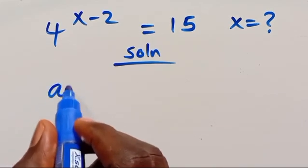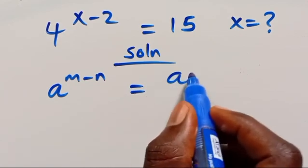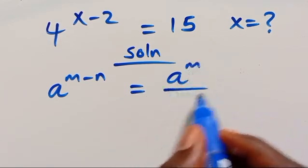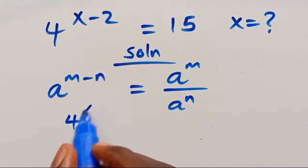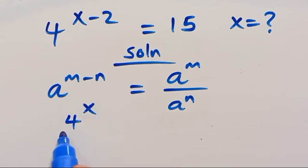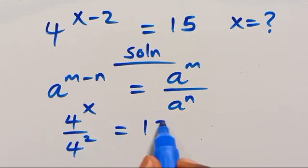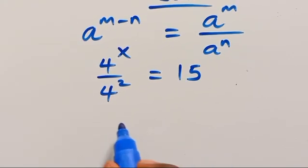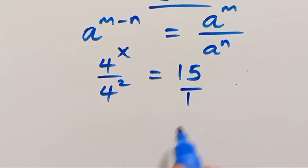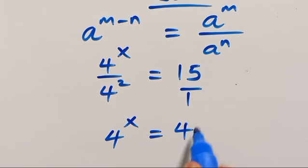In order to apply the rule A to the power of M minus N equals A to the power of M divided by A to the power of N, here we will have 4 to the power of X divided by 4 to the power of 2 equals 15. So we cross-multiply to get 4 to the power of X equals 4 to the power of 2 times 15.